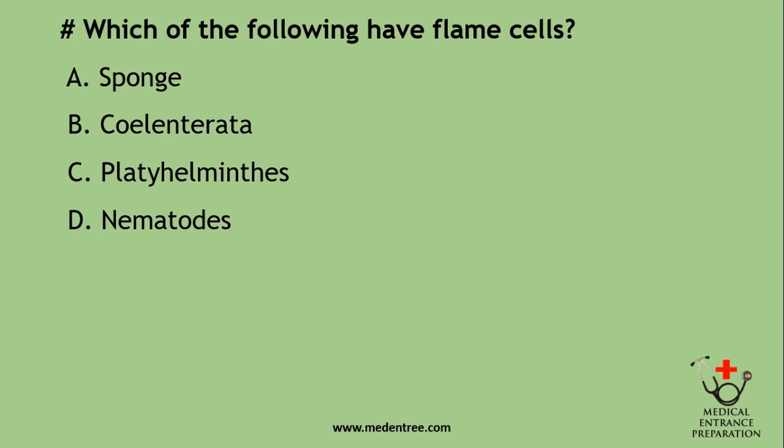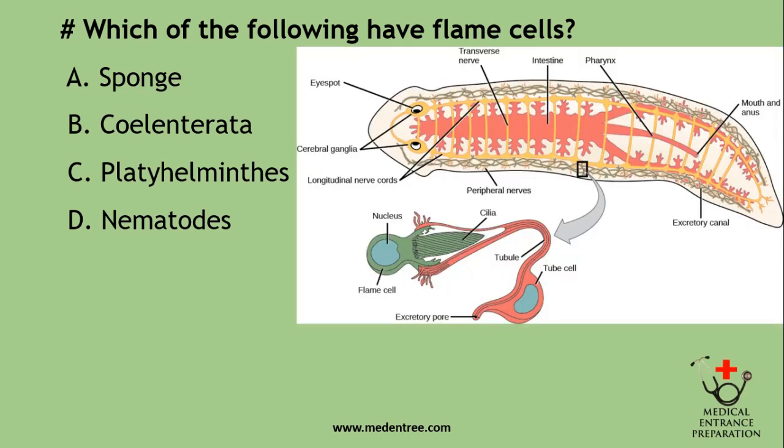Which of the following have flame cells? Sponge, Coelenterata, Platyhelminthes, or Nematodes? That is a very frequent question. The correct answer is Platyhelminthes, which have flame cells as their excretory organs. Due to the flame-like shape of the flagella, they are called flame cells.